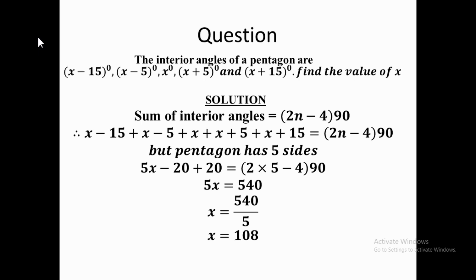In this video, we are going to use what you have learned so far to solve problems on polygons. The first question we are solving is the one on the screen right now. The question says that the interior angles of a pentagon are: x minus 15 degrees, x minus 5 degrees, x degrees, x plus 5 degrees, and x plus 15 degrees. You have to find the value of x. You should know what a pentagon is — it is a polygon with five sides.